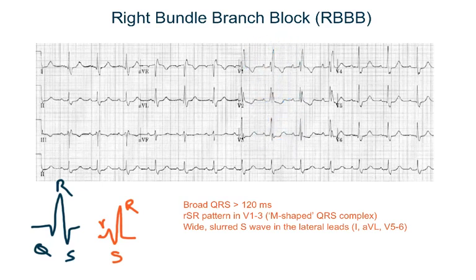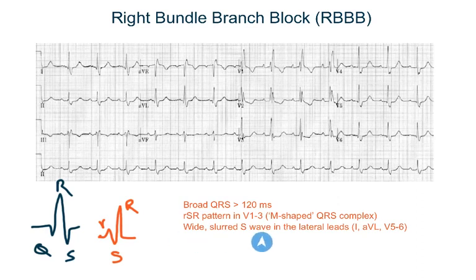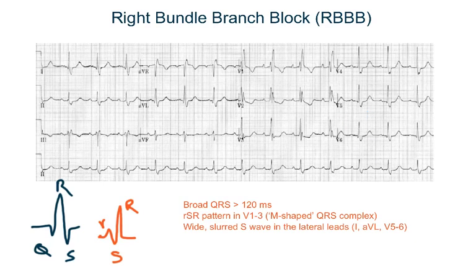Also, you will notice that the QRS complexes are broad — that is, more than 120 ms or more than three small squares. There will be wide slurred S waves in lateral leads, that is lead 1, AVL, V5, and V6.